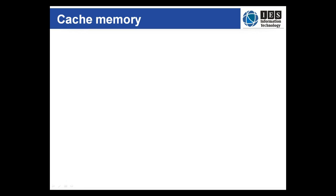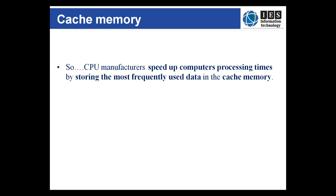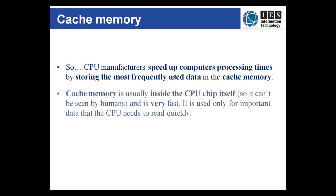Therefore, to reduce the impact of a slow bus, CPU manufacturers speed up the process by storing the most frequently used data in what's called cache memory. Cache memory is usually etched into the CPU chip itself, so we really can't see it. It's tiny and very fast, and is only used for important data the CPU needs to read quickly and often.